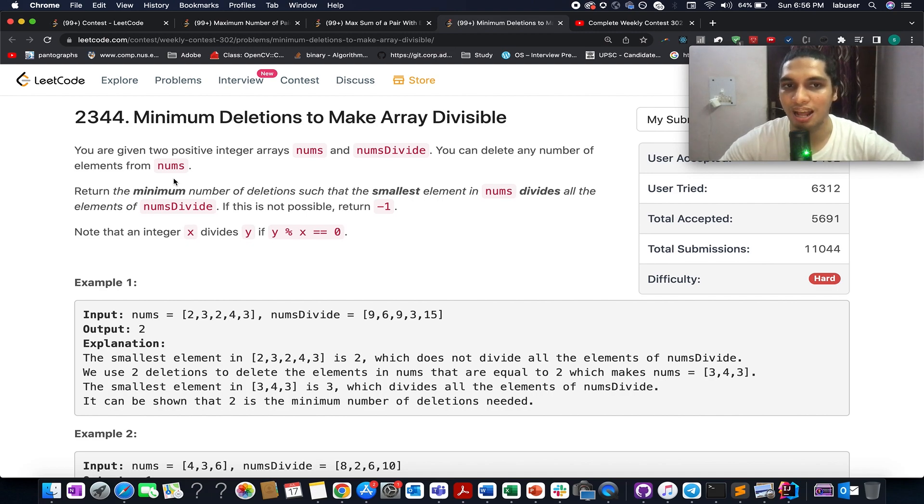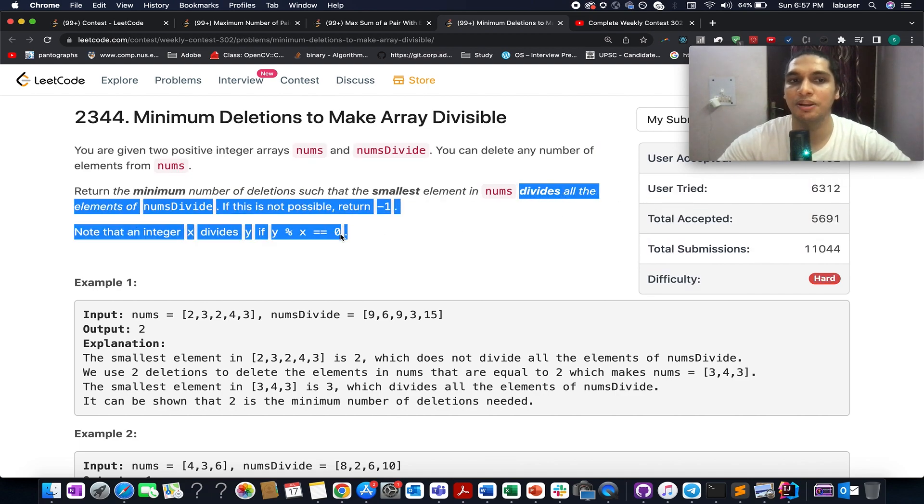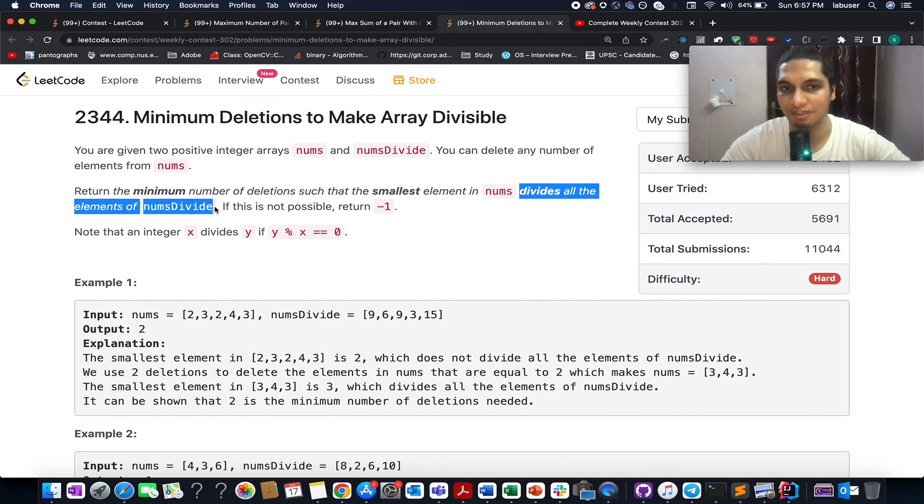Here in this question you are given two arrays: one is nums array and nums divide array. What you need to identify? You need to identify the number of deletions that should be done such that the smallest element in the nums array divides all the elements of nums divide array. And in case it is not possible, we need to return minus one.